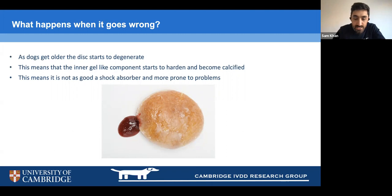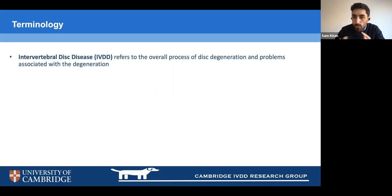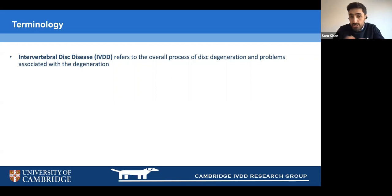Before moving on, it's important to define key terms because there are lots of different words used. Intervertebral disc disease is an umbrella term encompassing the overall process of disc degeneration and any associated problem, including discospondylitis — infection of the disc. It's not very specific, so it's important to understand that's what we mean when we use that general term.